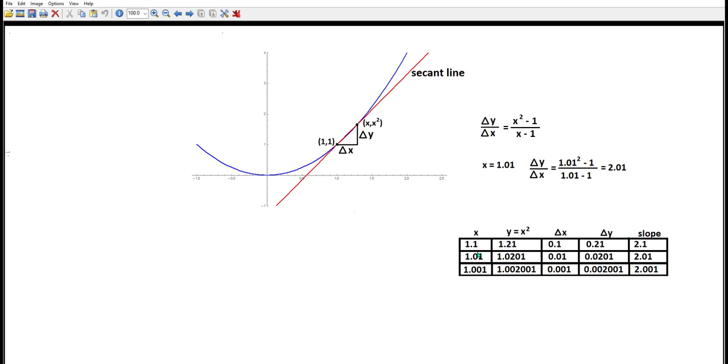When x is even closer, 1.001, the slope is 2.001. Those numbers look like they're getting closer and closer to 2 as x gets closer and closer to 1.